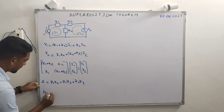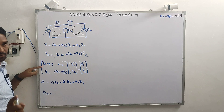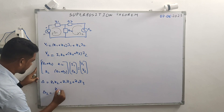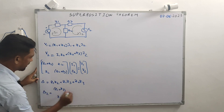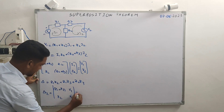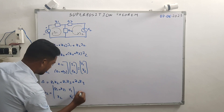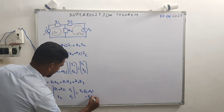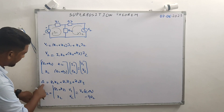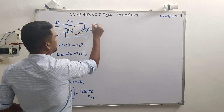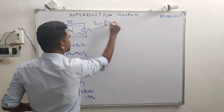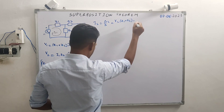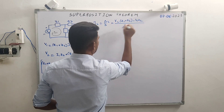Using Cramer's rule, find delta-2 by replacing the second column with [V1; V2]. Delta-2 equals V2·(Z1+Z2) minus V1·Z2. Therefore i2 equals delta-2 over delta, which equals [V2·(Z1+Z2) minus V1·Z2] divided by delta.